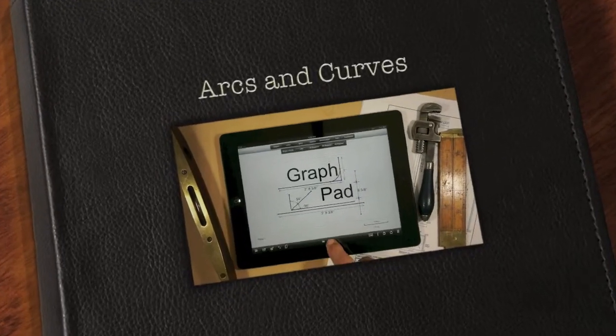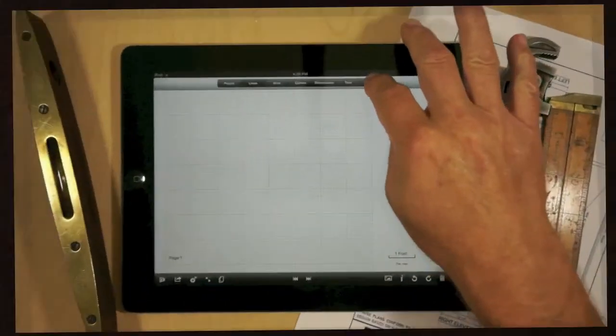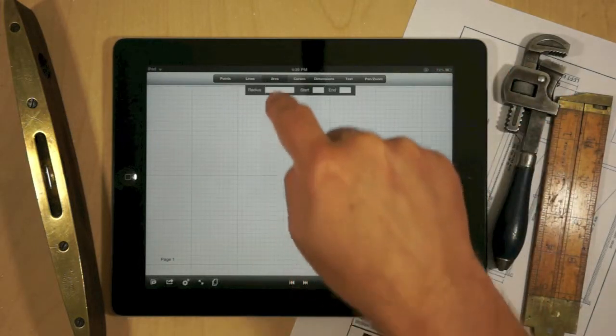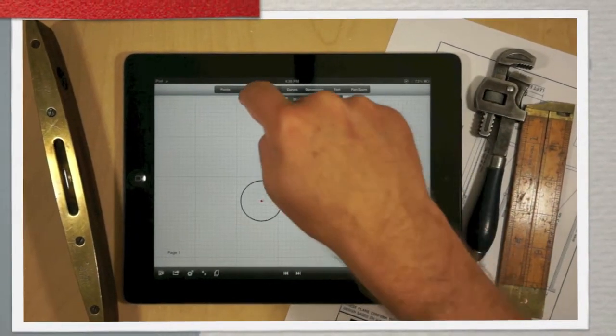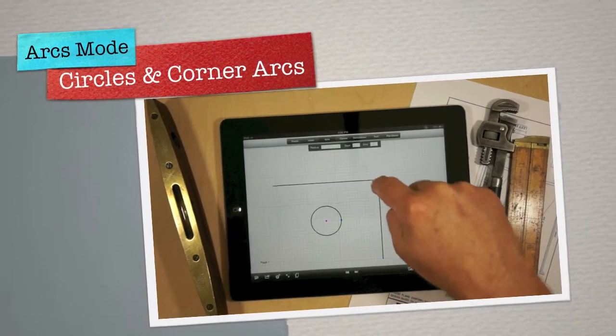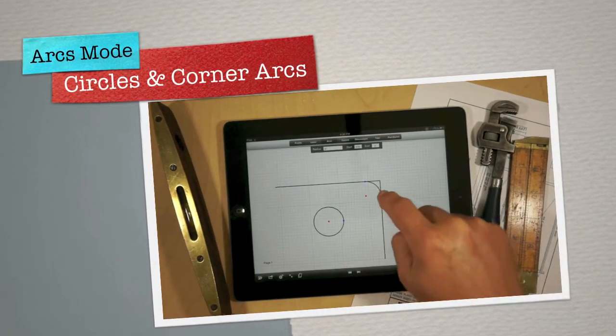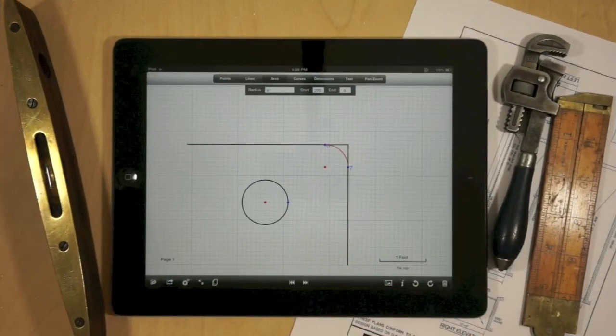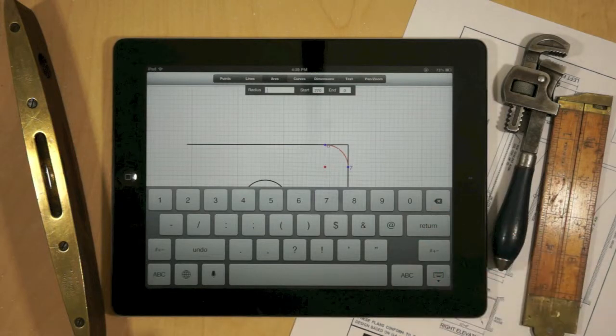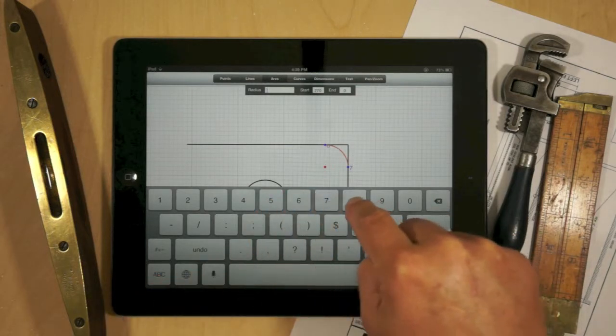The third tutorial covers both arcs and bezier curves. The arcs mode allows you to create both circles and also an arc at the intersection of two lines. In both cases, touching the perimeter allows you to actually manipulate the radius of the arc.